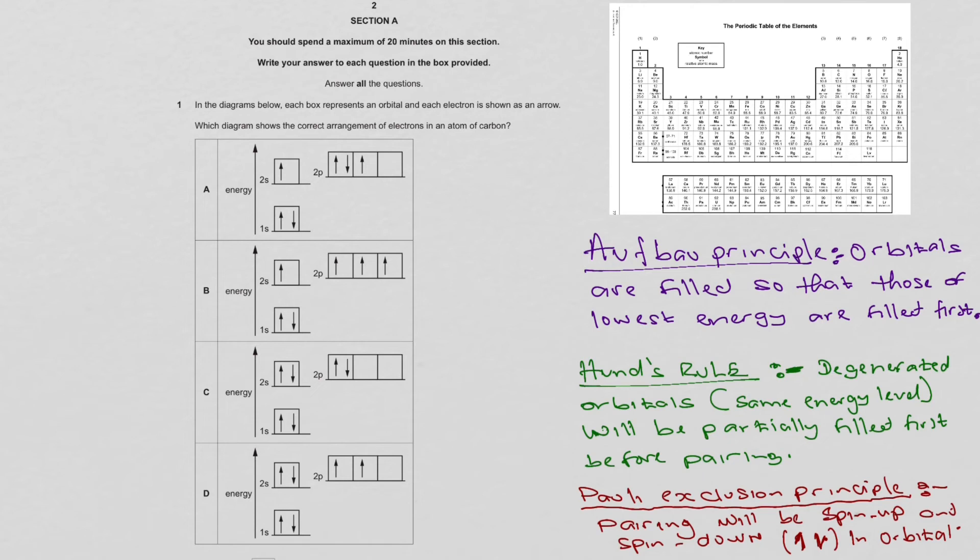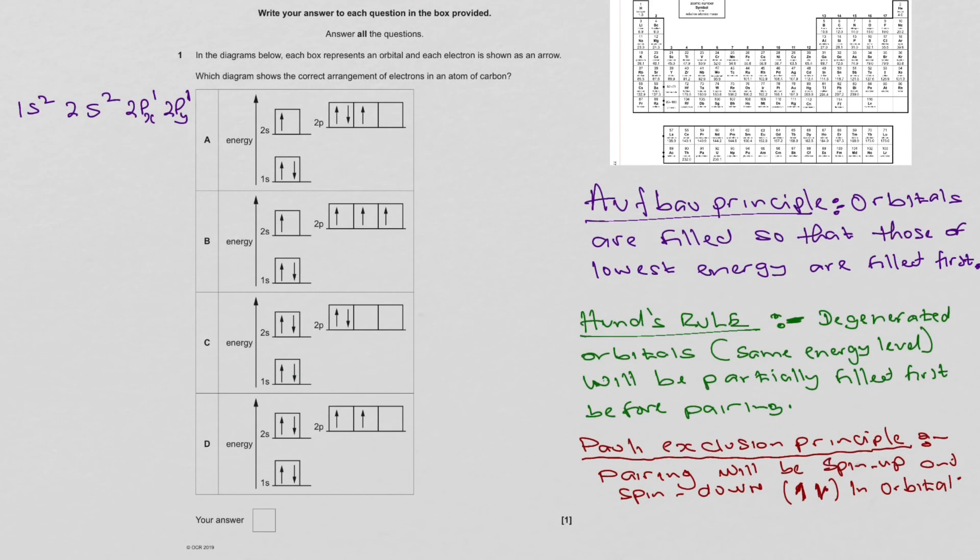Now to populate carbon, it would be 1s². That would be the first energy level here, 1s. You have to populate it with two electrons, followed by the next one, which will be 2s², 2px¹, 2py¹. We can circle that one as D and write D.